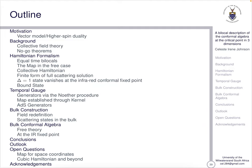So let's have a look at the outline for today. We're going to start with a motivation describing the vector model higher spin duality, look at some background information, the Hamiltonian formalism, temporal gauge, and describe the bulk construction and bulk conformal algebra. There's lots of information hidden within this presentation so feel free to reach out to me.